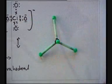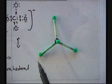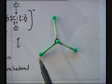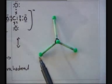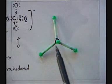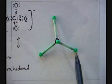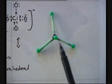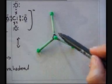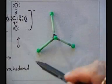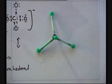Molecular geometry depends on the position of the nuclei in three-dimensional space. Moving from Oxygen to Chlorine to Oxygen — Oxygen, Oxygen — we have a tetrahedral molecular geometry. To be continued.